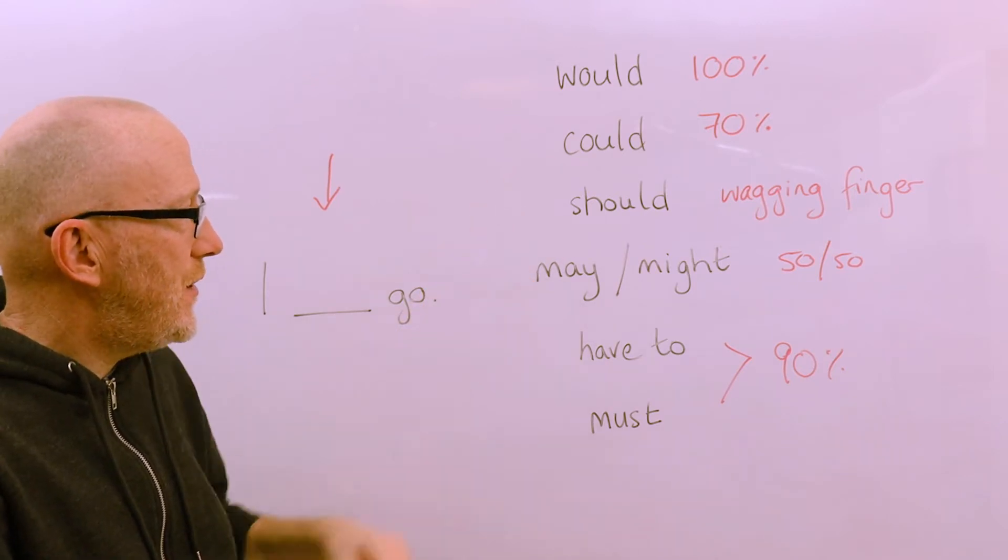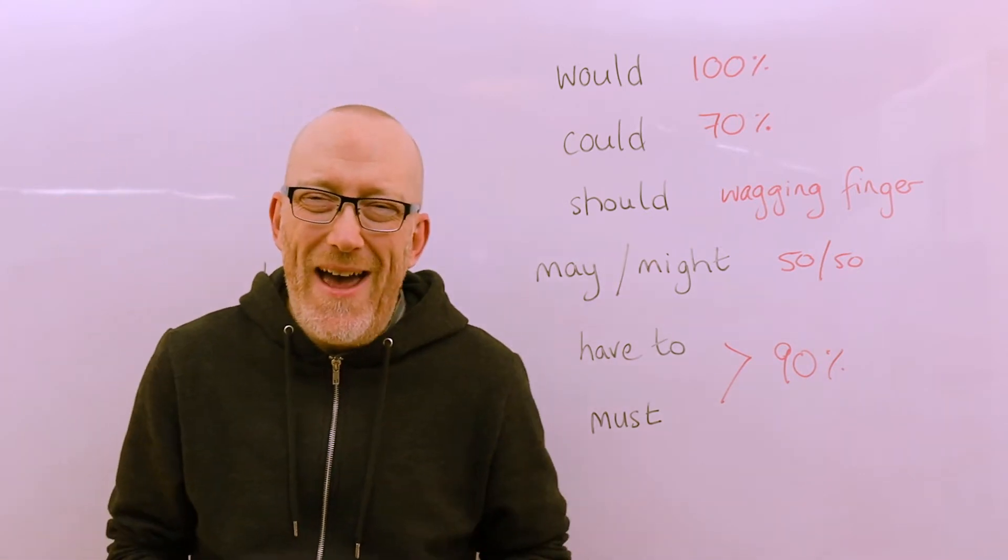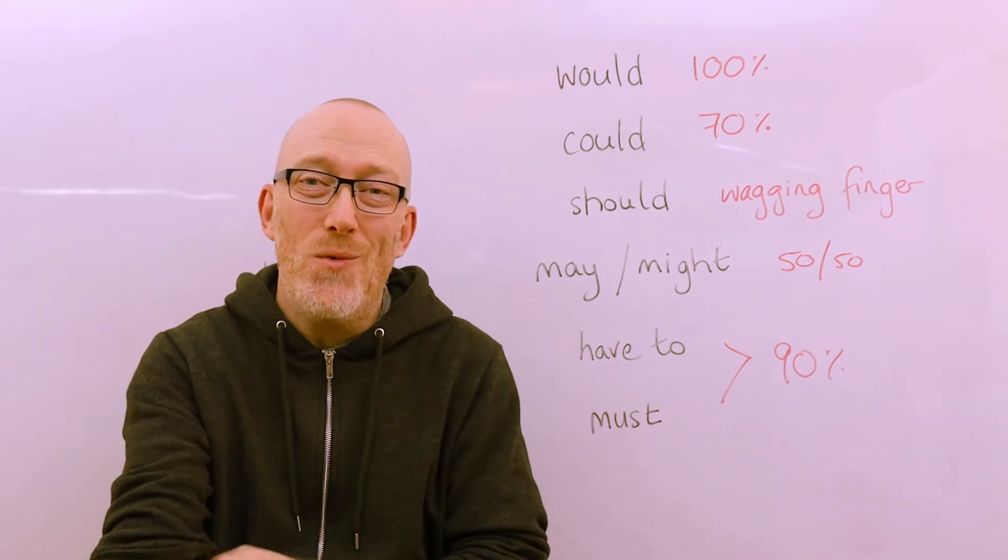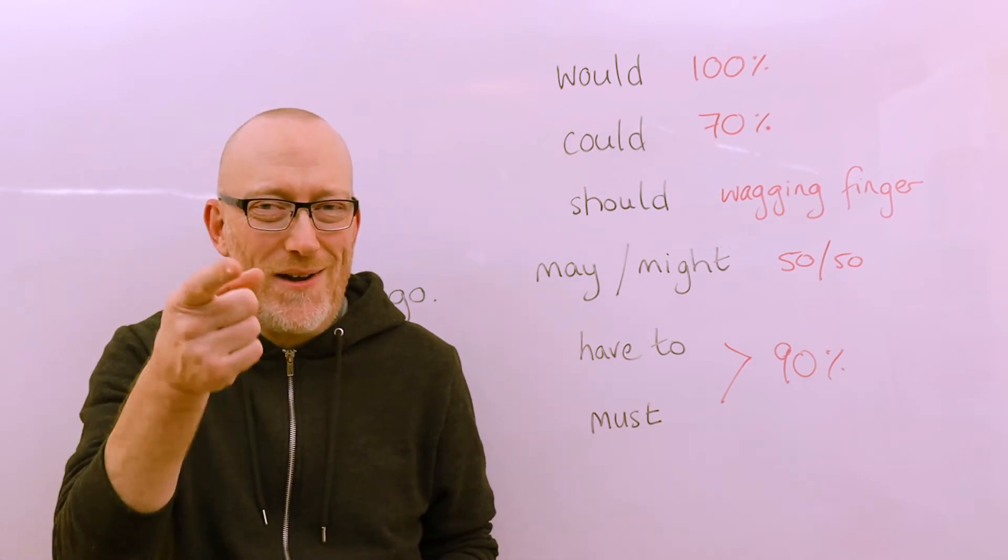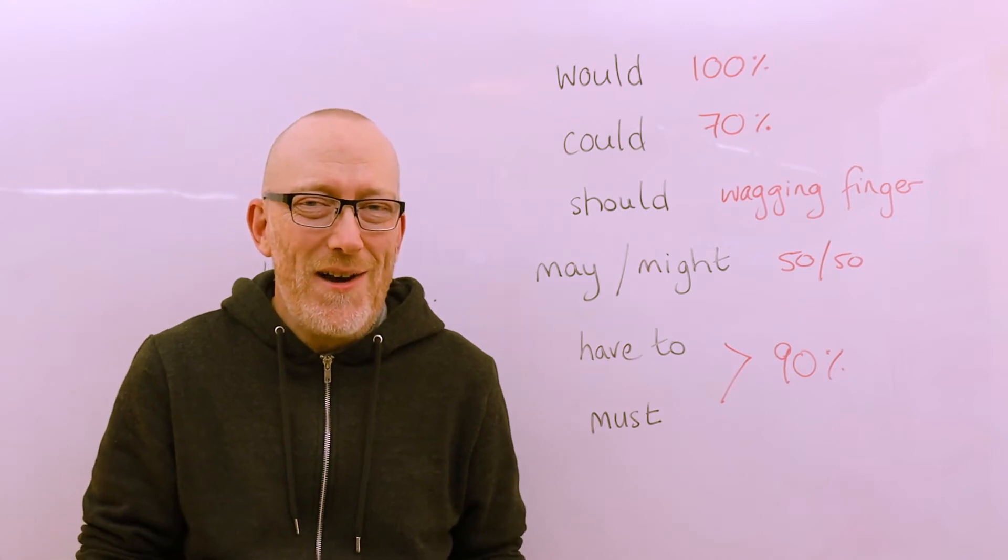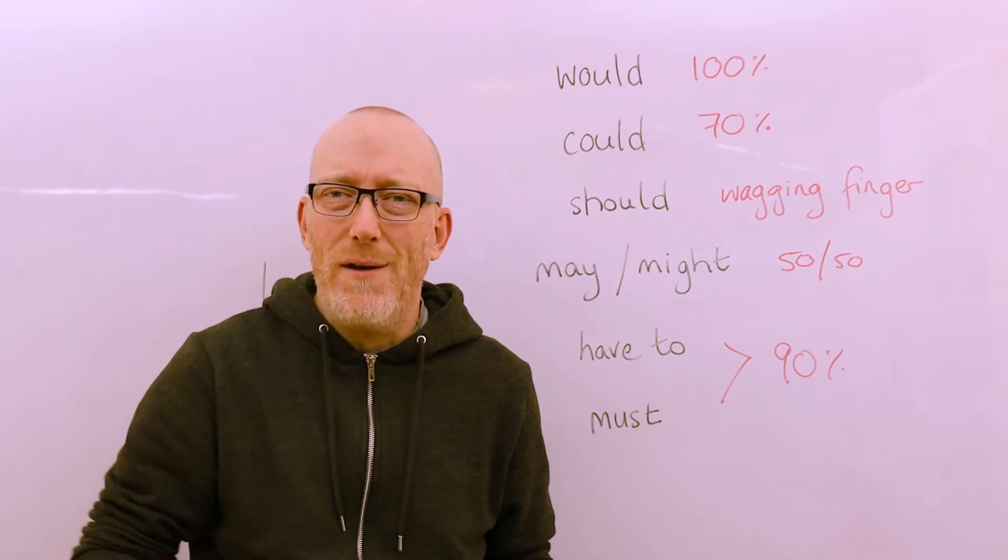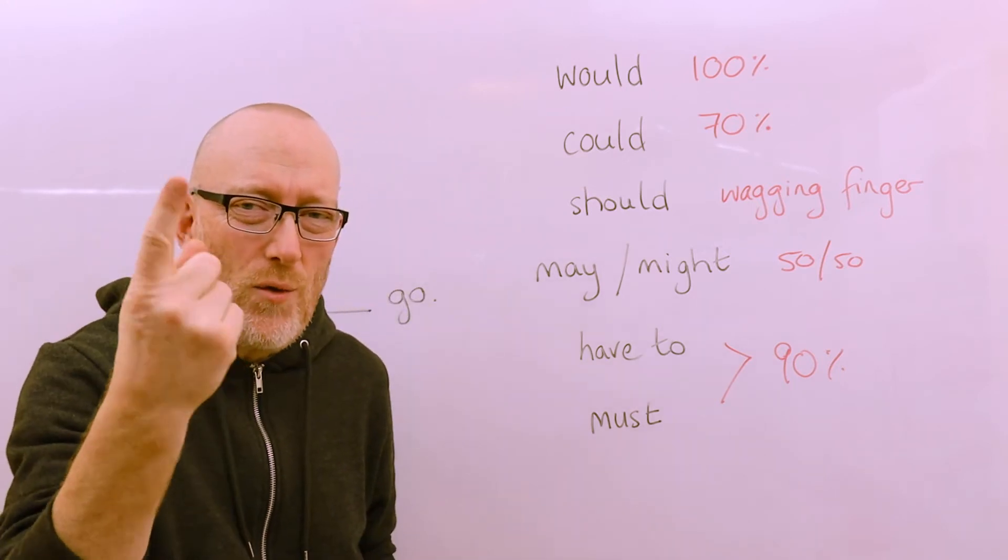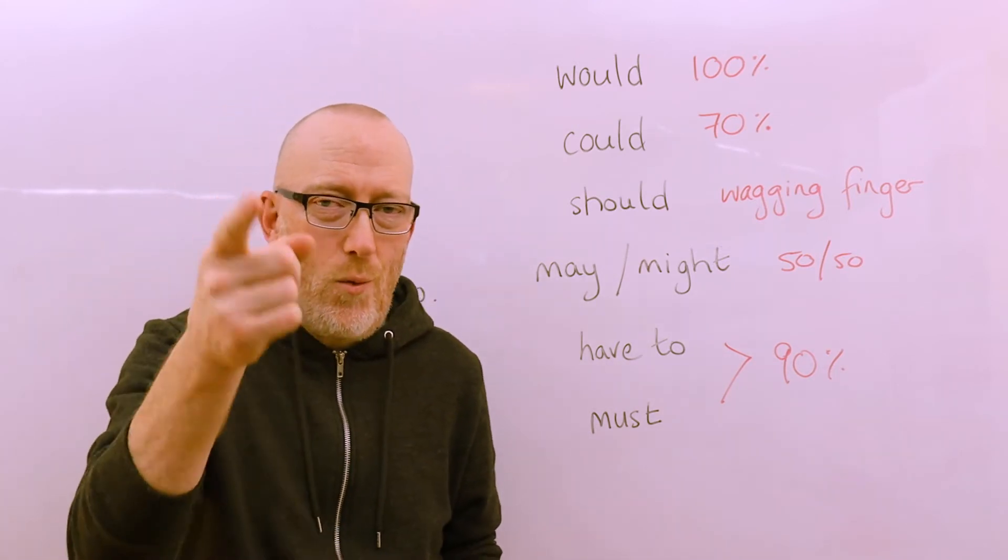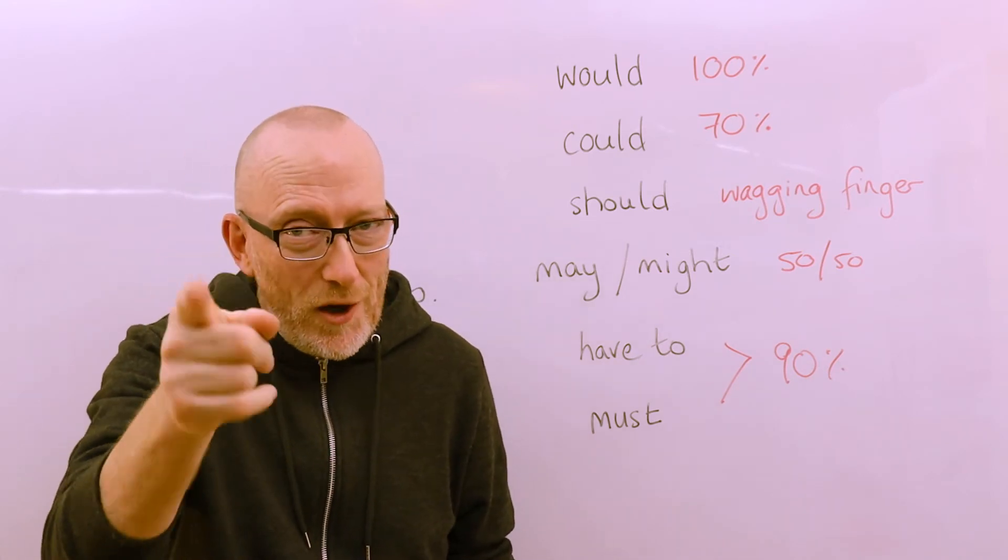Now that brings us to should. Now should is what I like to call the wagging finger, because whenever anybody is using the word should with you or perhaps you're using the word should with somebody else, you're kind of saying well you should do something. Perhaps I'm saying to you guys well you should go to the party. You should go, you know it's going to be good for you. So I like to call it the wagging finger. So just imagine whenever you're going to be using the word should that you're wagging your finger at somebody and you're kind of saying well you know you should be doing this.